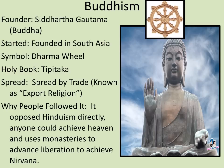The following religion is made in direct opposition of Hinduism — and that's Buddhism. It is going to start in India but is going to spread mostly to China and a little bit into Southeast Asia. The founder is Siddhartha Gautama, the Buddha. It is going to be founded in South Asia. The symbol is the Dharma wheel — looks like a nautical wheel. The holy book is the Tipitaka, and it's going to be spread by trade. It's known as the export religion. People follow it because those on the lower end of the caste system were tired and frustrated of being considered the lowest of the low.